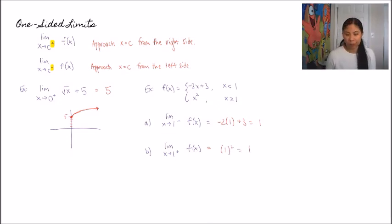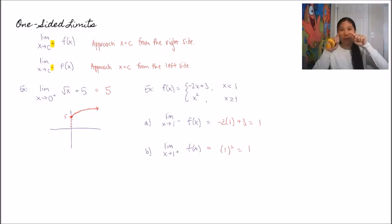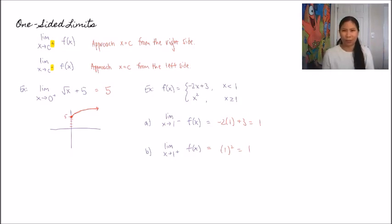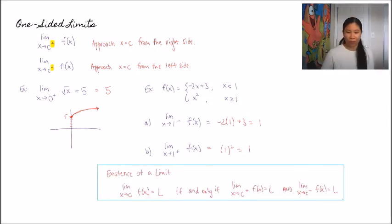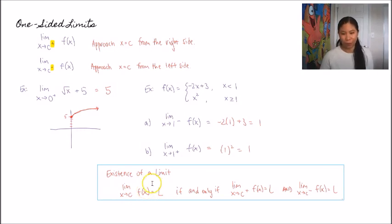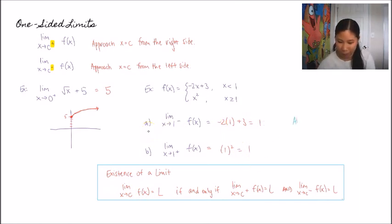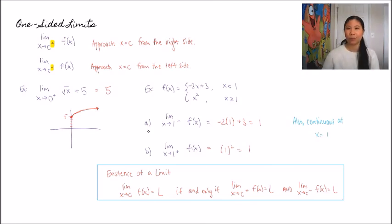So both one-sided limits equal 1. If the left and right limits are equal to the same number, this means the overall limit exists and equals that number. Furthermore, since both one-sided limits are equal — and the function value at x = 1 would also be 1 from the second piece — we also know the function is continuous at x equals 1. So computing one-sided limits can tell us both whether the limit exists and whether the function is continuous.